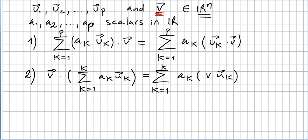So in order to prove this, we have to prove that it is a linear operation. We have to prove that the sum from k equals 1 to p of ak, this is a scalar, times uk vector, dot v equals the sum of ak scalar times uk dot the fixed v vector.